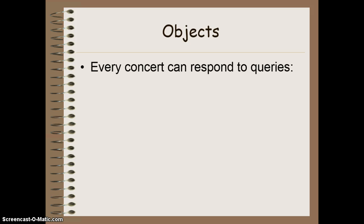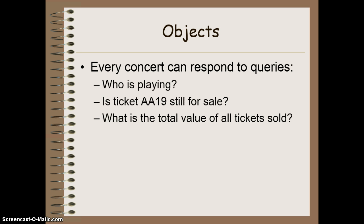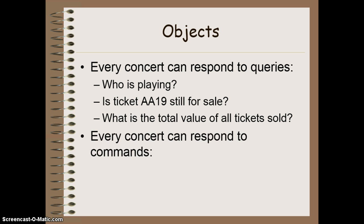Each of these concert objects is going to have the ability to respond to queries — things like who's playing the concert, asking about a particular seat if it's for sale or not, and what the total value of all the tickets sold is. Basically, these are our methods for being able to ask about any of those attributes. And then finally, we're going to have some commands — for example, sell a particular ticket, which would change that ticket's unsold status to sold.